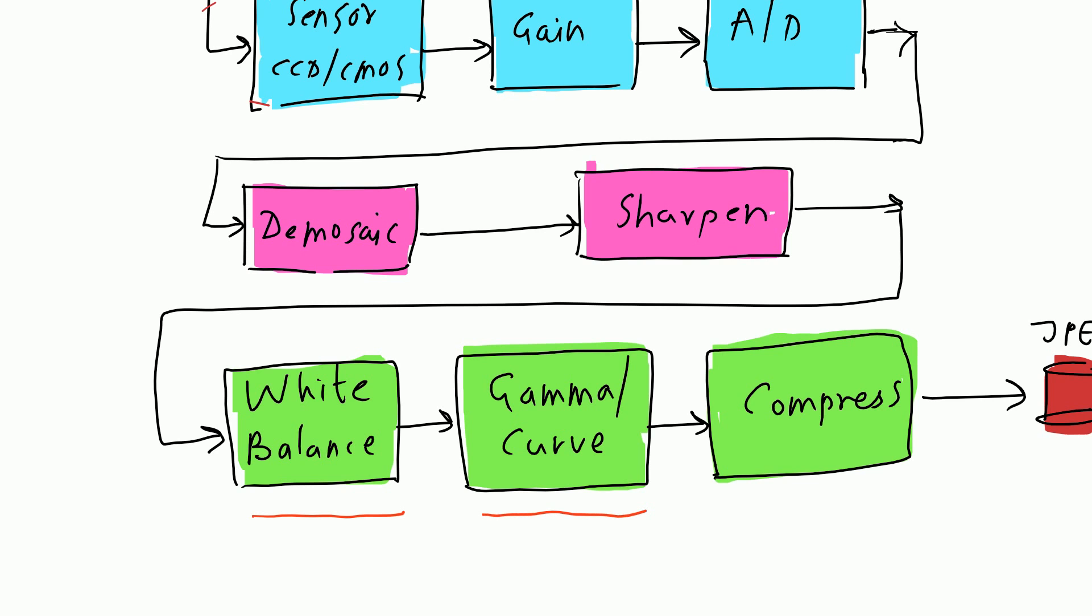The next block is gamma or curve. It is also called gamma correction. It is the name of non-linear operation used to code and decode the luminance or tri-stimulus values in video or for still images. It is defined by phi out is equal to a into phi in raised to gamma. Where a is a constant, v in and v out are input and output values which are non-negative.